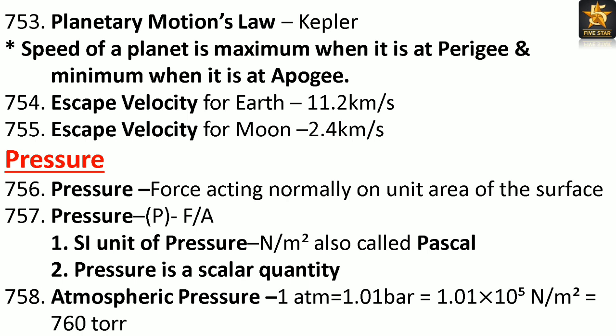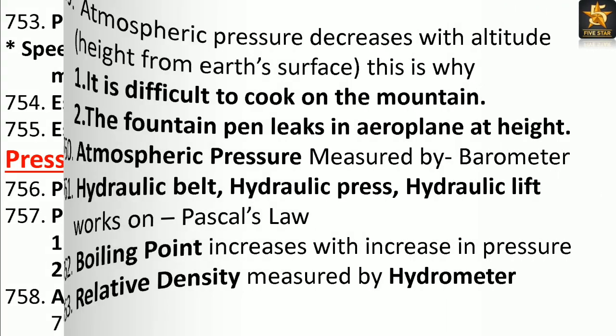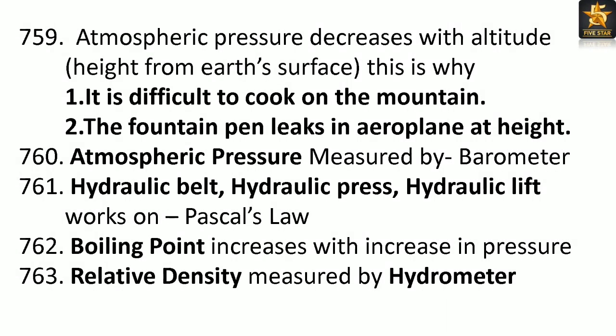Atmospheric pressure: 1 atmosphere equals 1.01 bar, equals 1.01 × 10⁵ N/m², equals 760 Torr. Atmospheric pressure decreases with altitude. This is why it is difficult to cook on a mountain, and a fountain pen leaks in an aeroplane at height.